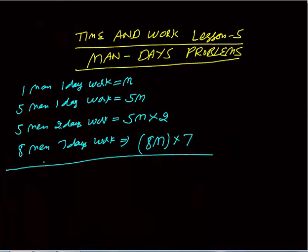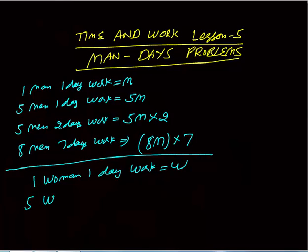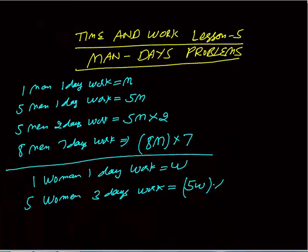Same way, if one woman one day work, we assume it as w units. So five women three days work: five women one day work is five w. In three days they will do five w into three units of work. We assume work as an initial letter — women's first letter is w, so one day work is w.